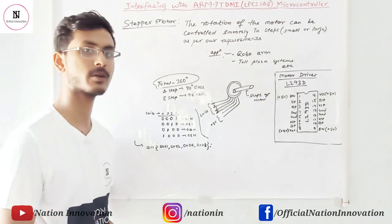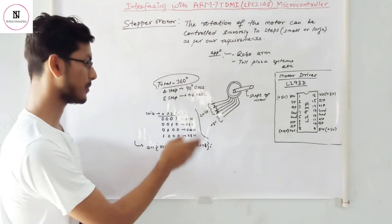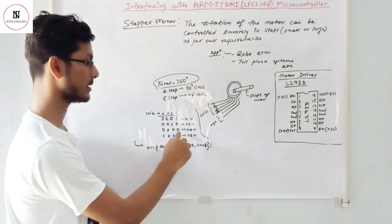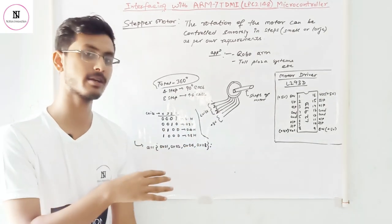If we want to rotate our stepper motor in the opposite direction, then we should just pass these values in the opposite. Firstly, we will pass 08, then 04, 02 and then 01. Then it will rotate in anti-clockwise.